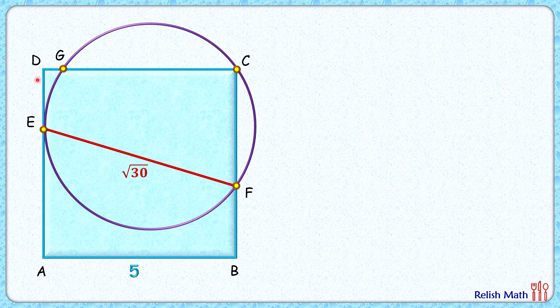Let's start by joining GF. Now GF is a chord which is subtending an angle of 90 degrees at the circumference. By theorem, GF is a diameter and the center O will lie on GF. Let's assume the radius of the circle is r centimeters. Thus OE length is also r centimeters.